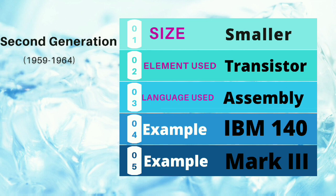Let's continue. To sum up the second generation: the size was smaller compared to the first generation, they used transistors, and the language used was assembly language. The first generation used machine language, while the second generation used assembly language. Here are two examples of second generation computers: first is IBM 1401 and second is Mark 3. There is one more example that you have to tell me. I hope everything is clear about second generation computers. We have covered the main features of the second generation.